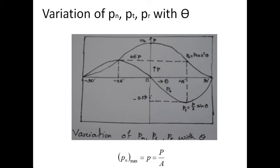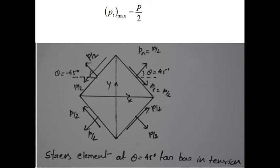The largest negative value of Pt is found when theta is plus 45. Numerically, the largest shear stress Pt max will be P by 2. So Pn max will be P, and the largest shear stress, or tangential stress, Pt will be P by 2.